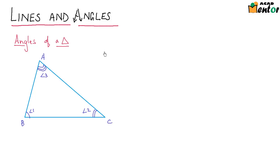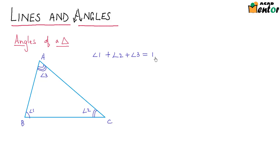From our previous classes, we already know the relationship between the three angles of a triangle. The sum of all three angles is 180 degrees. That means angle 1 plus angle 2 plus angle 3 is nothing but 180 degrees.